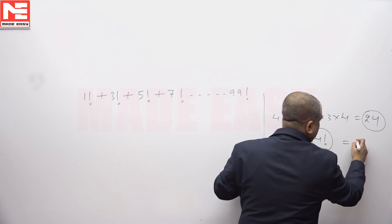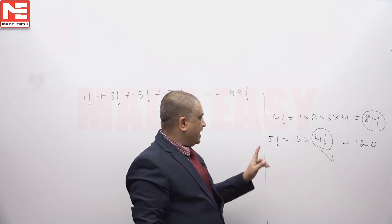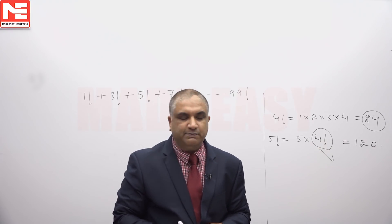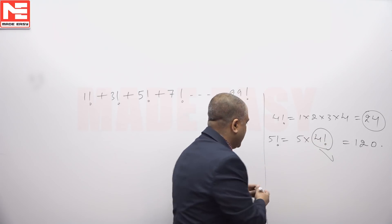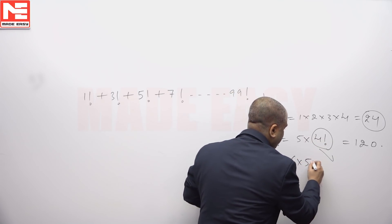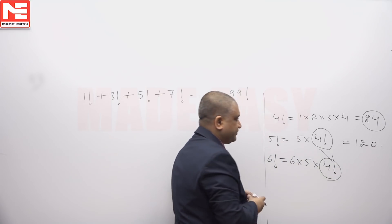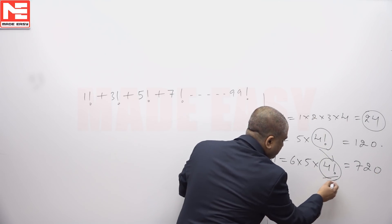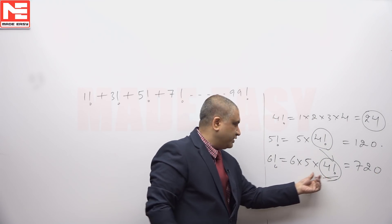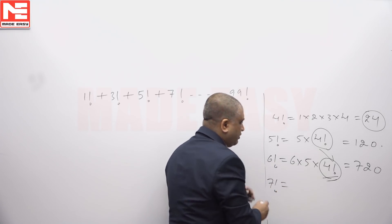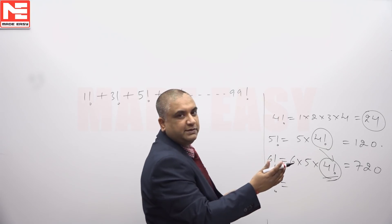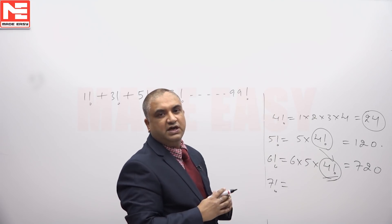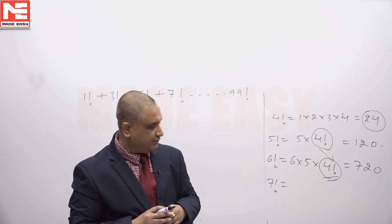5! is a multiple of 24. Factorial 6 will be 6 × 5 × 4!, which equals 720 — the exact value is not required. This is also a multiple of 24 since 4! is contained within it. Similarly, 7! and any other factorial beyond 4! is going to be a multiple of 24. From 4! onwards, every factorial is a multiple of 24.